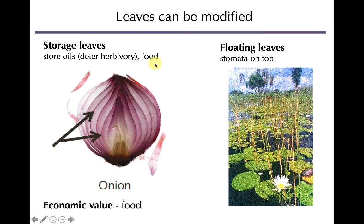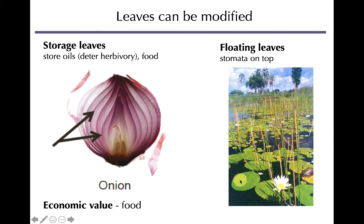Storage leaves are another modification; an onion is a classic example. The onion is mostly modified fleshy leaves — only a tiny part is stem — and they store oil (a lipid for energy) and phenolic compounds, which give the onion its pungent smell and taste and act as deterrents of herbivory. Floating leaves, like water lilies, have very large surface areas and their stomata are on the top of the leaf rather than the bottom, since they need to access gas from the air, not the water.